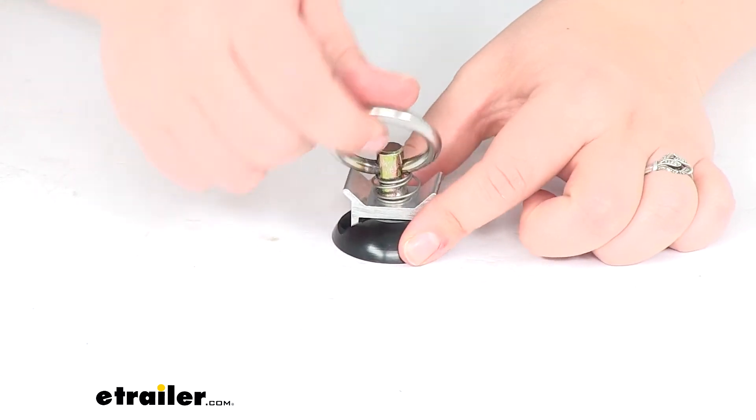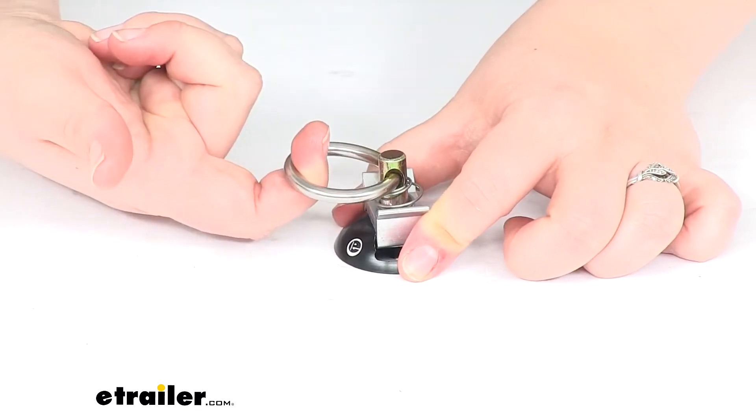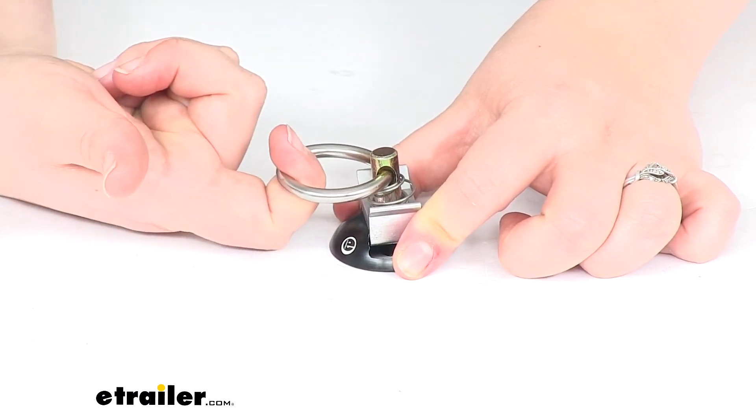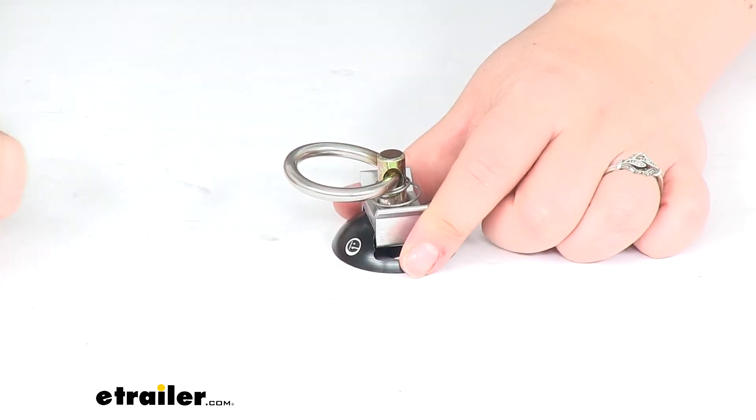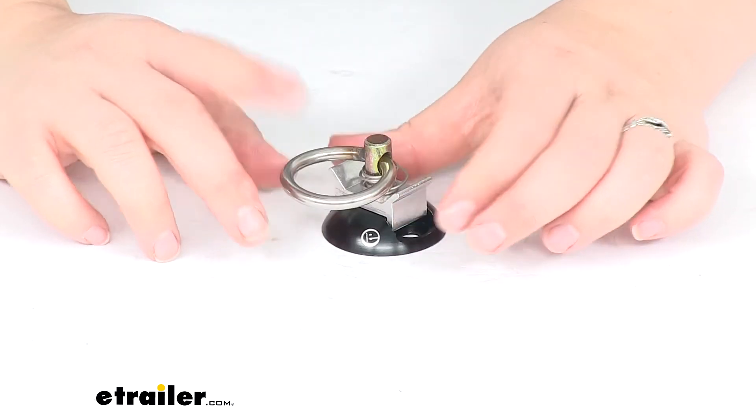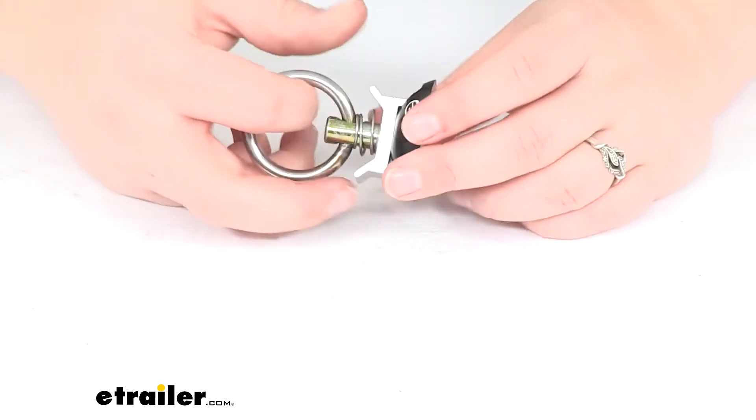This gives us that secure anchor point, so now we can put a rope or a strap or anything on there to tie down a motorcycle, a bike, any other kind of cargo that we'd want to have with this.